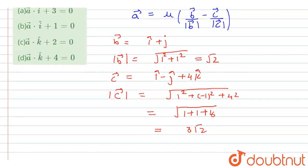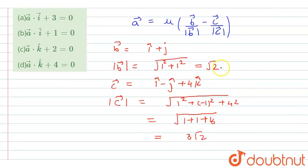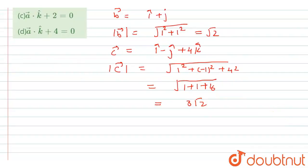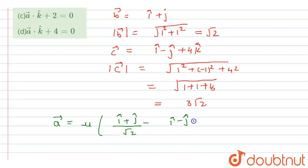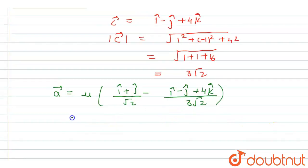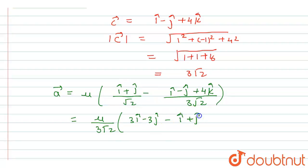Now we put these values into the formula. The value of vector a equals μ times [(î + ĵ)/√2 − (î − ĵ + 4k̂)/(3√2)]. Taking 3√2 as common, and multiplying the first term by 3, we get μ/(3√2) times (3î + 3ĵ − î + ĵ − 4k̂).